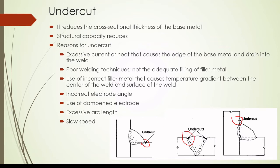Use of incorrect filler metal can cause a temperature gradient between the centre of the weld and the surface of the weld, and that could also be a reason. Incorrect electrode angle could also be a reason, as could use of a damp electrode. Excessive arc length and slow speed welding can also lead to melting of the base metal and pulling material into the weld pool — these are the kinds of things we can identify as reasons for undercut.